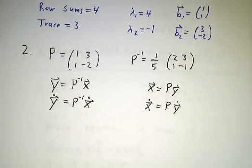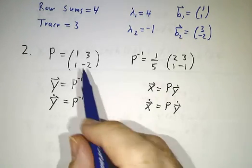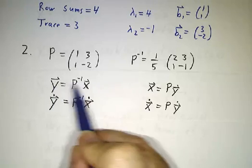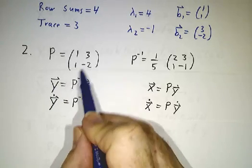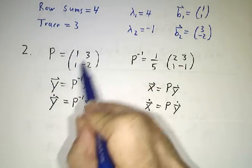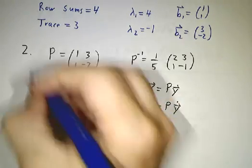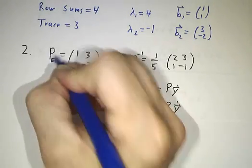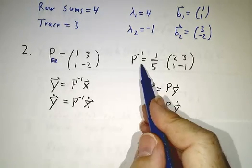Next, we define y to be the coordinates of x in the B basis. And how is y related to x? By a change of basis matrix. Here's the matrix whose columns are B, so this is P_eB, and this is its inverse.